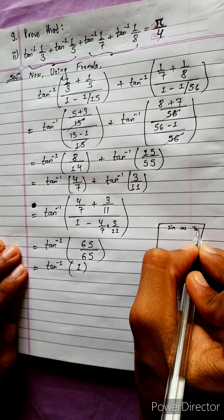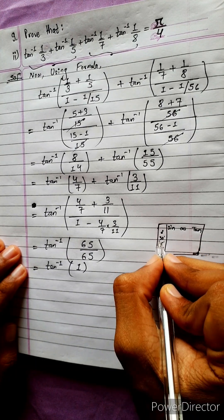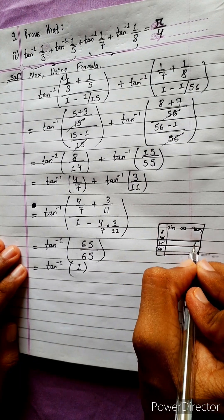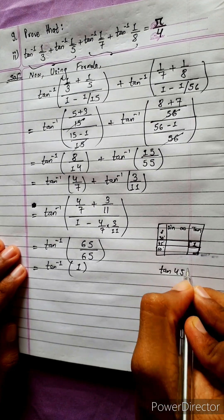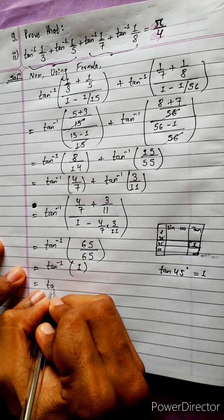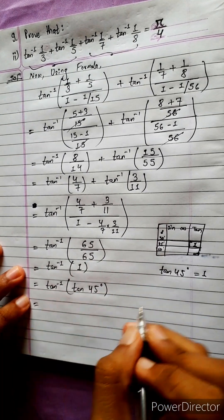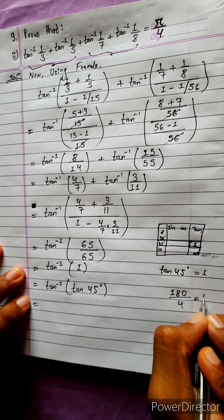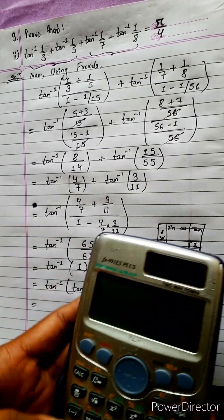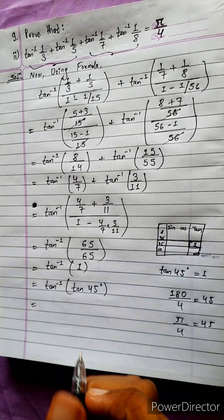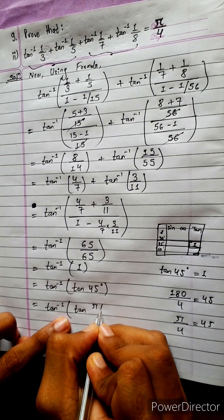Using the trigonometric table: sin, cos, tan — for 0°, 30°, 45°, 60°, 90°. tan 45° equals 1, so tan inverse 1 equals 45°, which equals pi by 4.